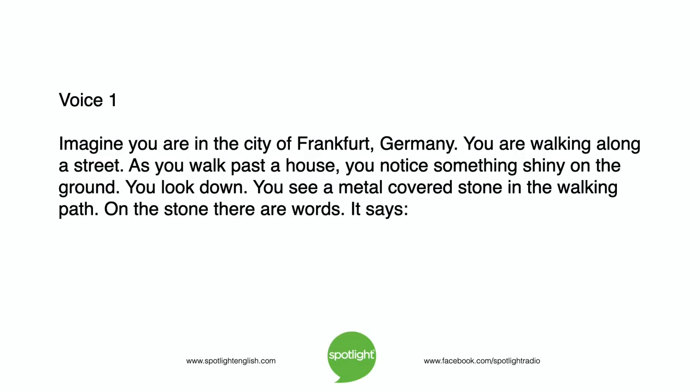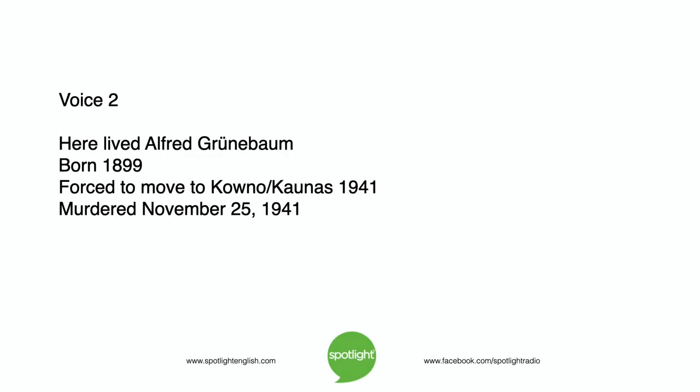Imagine you are in the city of Frankfurt, Germany. You are walking along a street. As you walk past a house, you notice something shiny on the ground. You look down. You see a metal-covered stone in the walking path. On the stone, there are words. It says, "Here lived Alfred Grunenbaum. Born 1899. Forced to move to Kovno Konis, 1941. Murdered November 25, 1941."